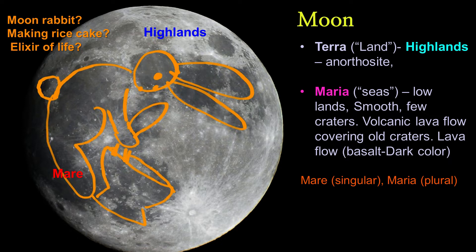For some countries, when we look at the Moon, they have some stories. Moon rabbit — the moon rabbit in folklore is a rabbit that lives on the Moon, based on a drawing that identifies the markings of the Moon as a rabbit. A rabbit is pounding something with a mortar and pestle, making rice cake for the elixir of life.